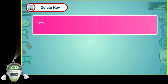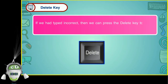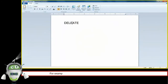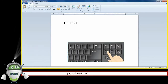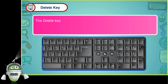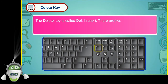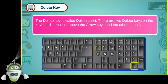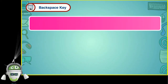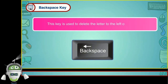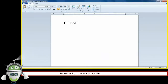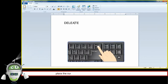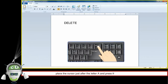Delete key: If we have typed incorrectly, we can press the Delete key to erase the wrong letter. This key deletes the letter to the right of the cursor. For example, to correct 'daelete' to 'delete', place the cursor just before the letter A and press the Delete key. The Delete key is called 'Del' in short. There are two Delete keys on the keyboard. Backspace key: This key deletes the letter to the left of the cursor. To correct the spelling, place the cursor just after the wrong letter and press the Backspace key.